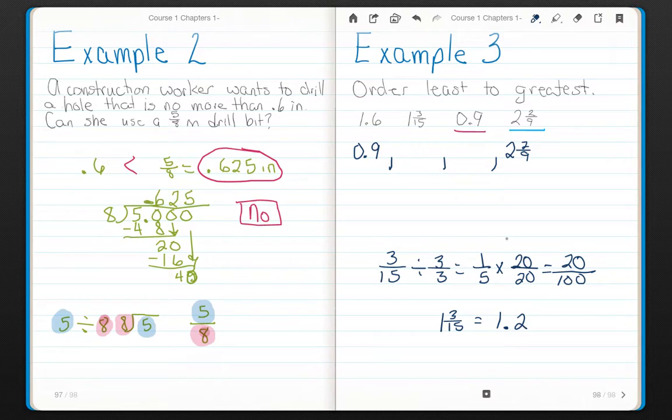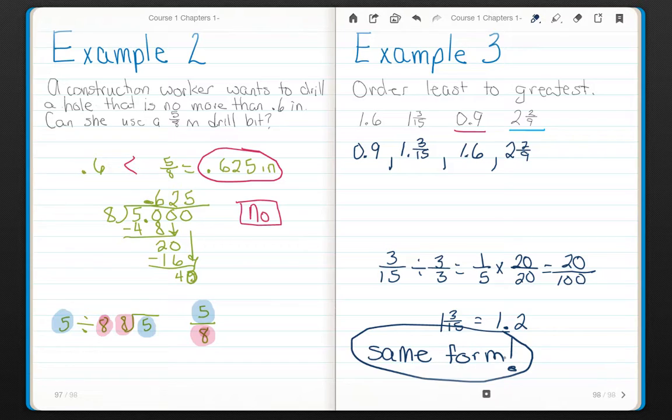Well, 1 point 2 is smaller than 1 point 6. So 1 point 2 would be next. Except that you're going to write it as the actual original problem. So 1 and 3 fifteenths and then 1 point 6. So you need to make sure that when you're comparing decimals and fractions that you compare them in the same form. Whether you convert them both to fractions or you convert them both to decimals, it doesn't matter as long as they're in the same form.